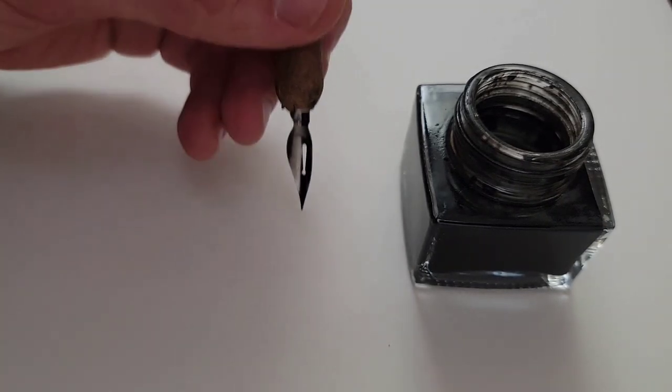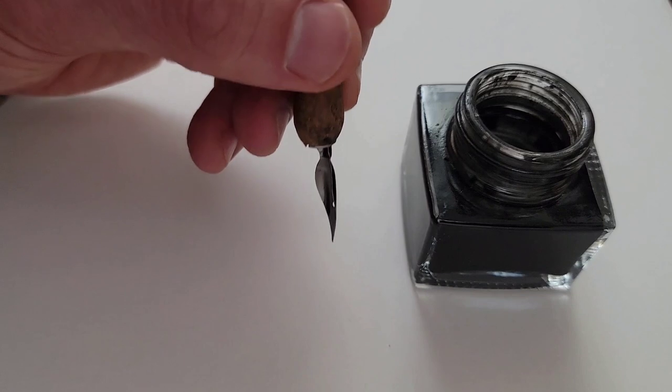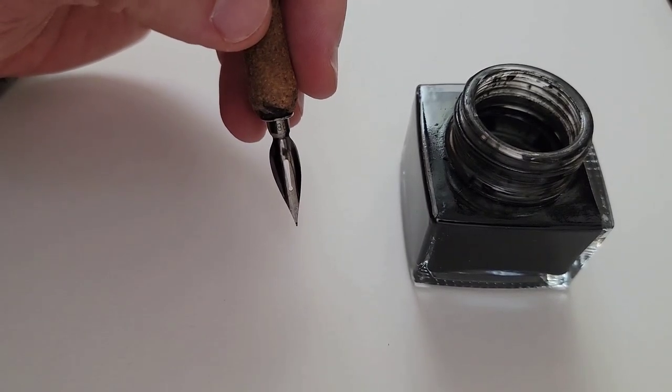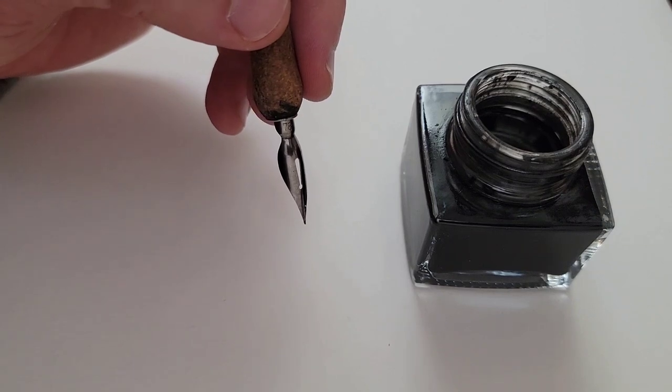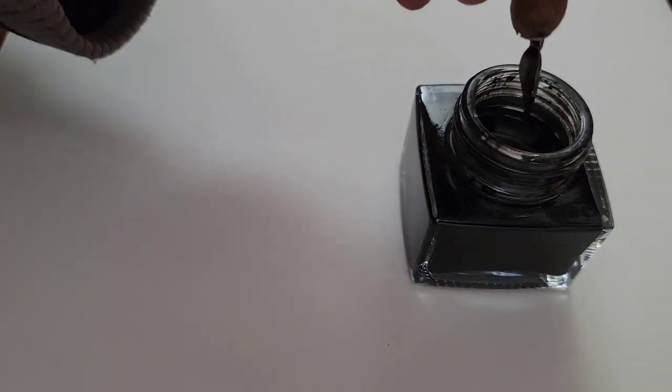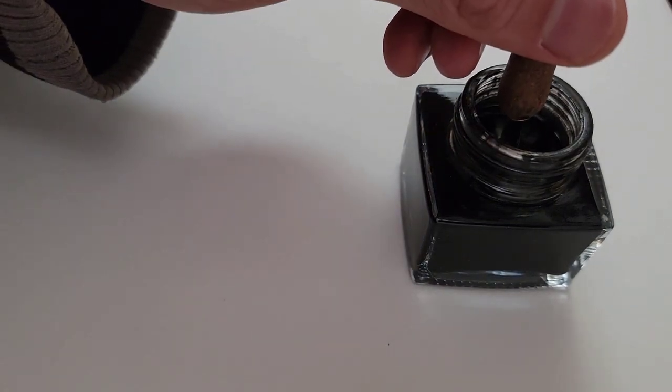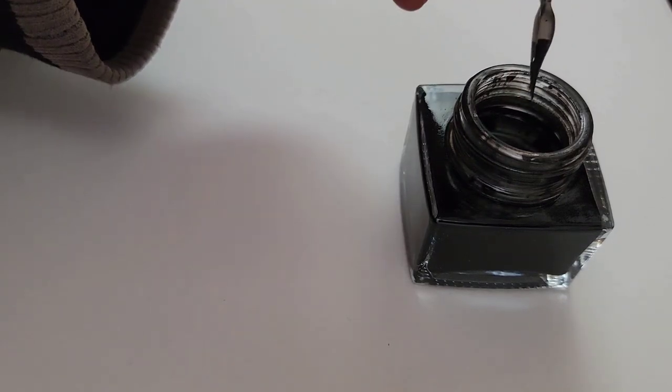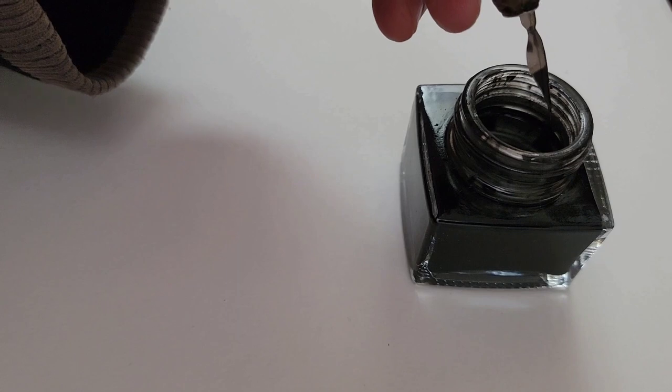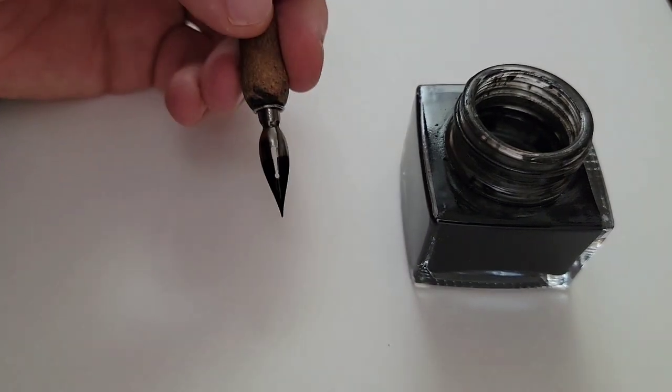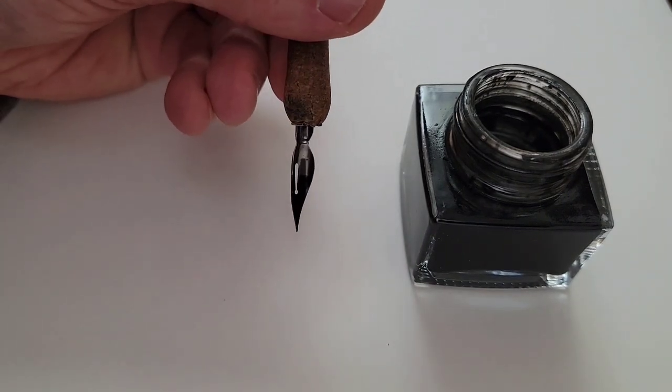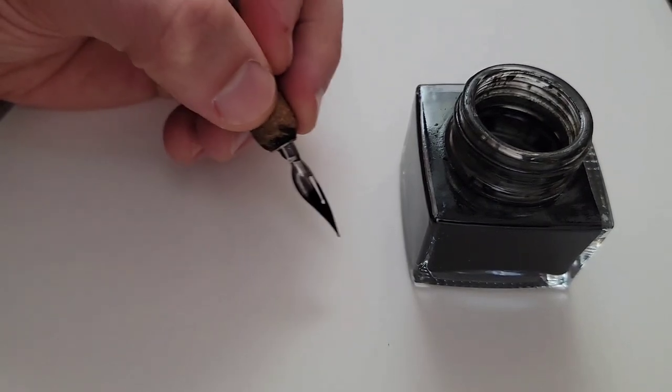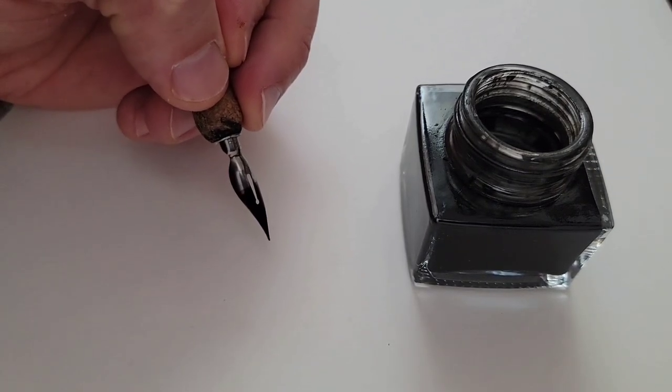When I dip the pen into the ink, what I want to do is dip it no further than that reservoir. I usually like to dip it about halfway so that half of that reservoir is submerged. And then when I pull it out, that pen is now loaded with ink and I can now start to draw the pen across the paper and create marks.